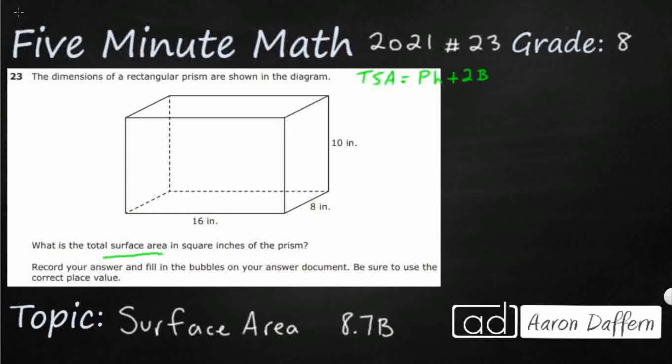And so that doesn't make a whole lot of sense unless you really know what those letters stand for. So let's figure this out because if we're looking at the total surface area, we just want to look at the faces. We've got six faces on a rectangular prism. And so that 2B is right here. So that's my base.